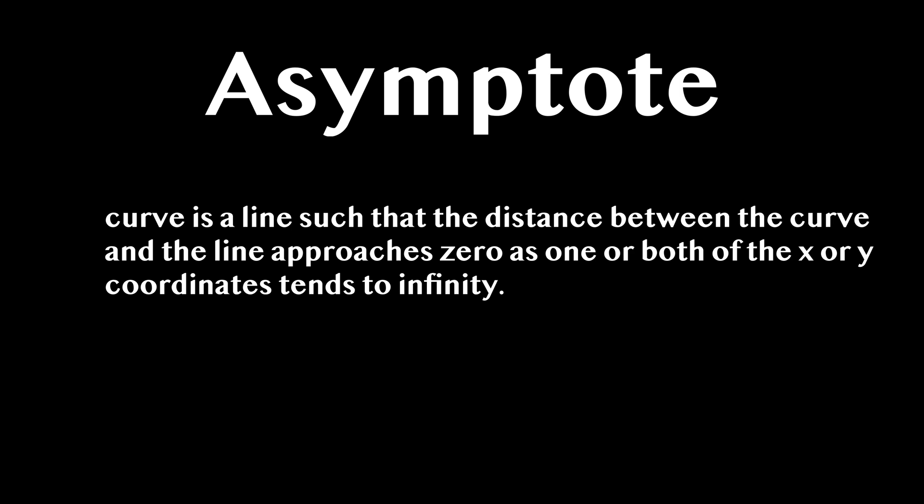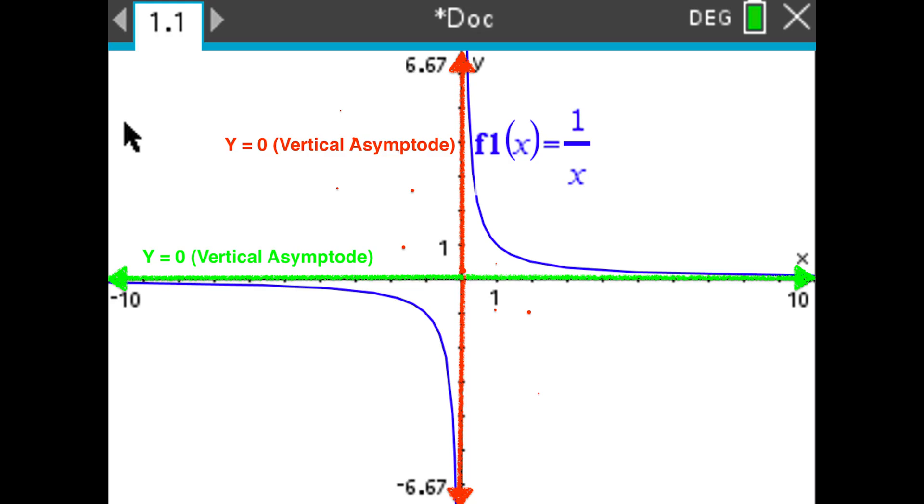Considering this in layman terms, this means that asymptotes are formed when an equation always approaches a certain value but never reaches it.